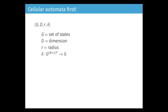Let's first define precisely what a cellular automaton is. A cellular automaton is a formal model of computation which consists of a finite set of states g, a dimension d which is an integer, another integer r called the radius, and a local update rule normally noted delta. The idea is that we have an infinite regular grid in which we arrange an infinite number of identical finite automata.